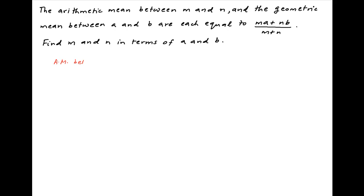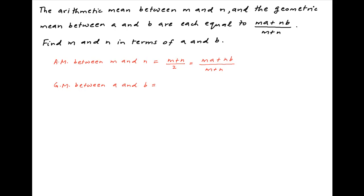The arithmetic mean between M and N is equal to (M + N)/2, and this is given to be equal to (MA + NB)/(M + N). The geometric mean between A and B is equal to the square root of AB, and this is also given to be equal to (MA + NB)/(M + N).